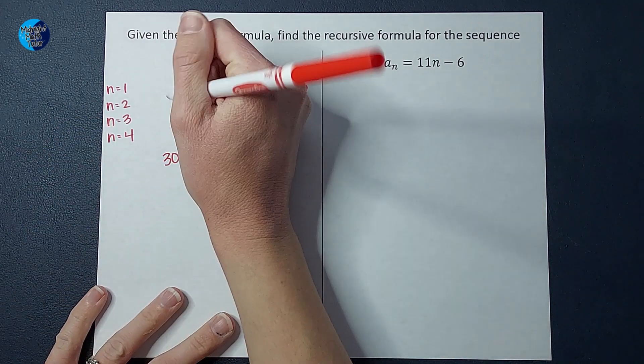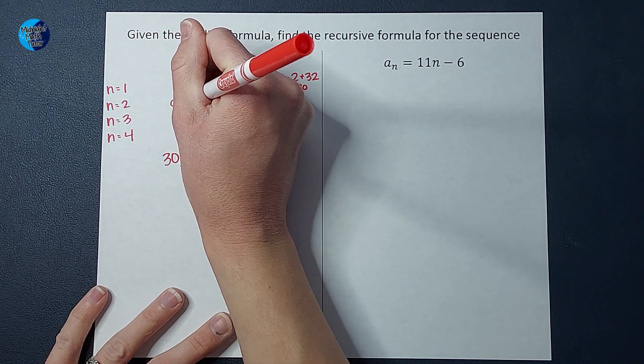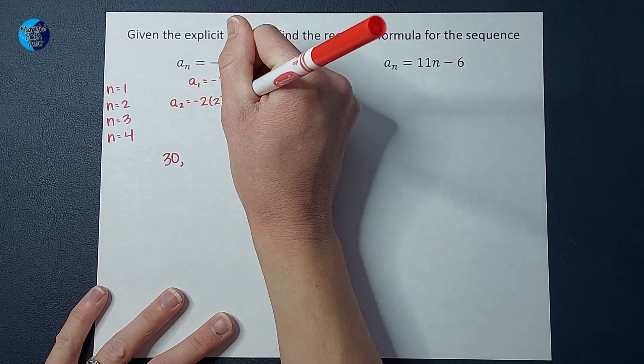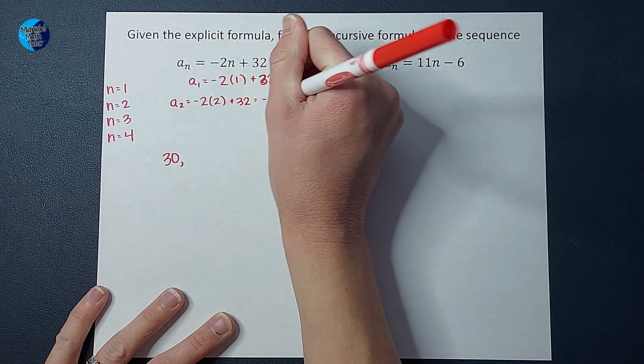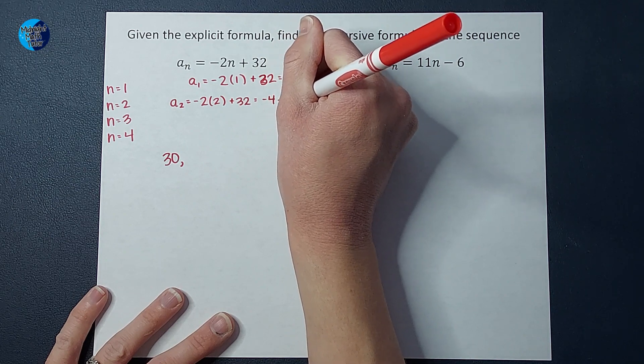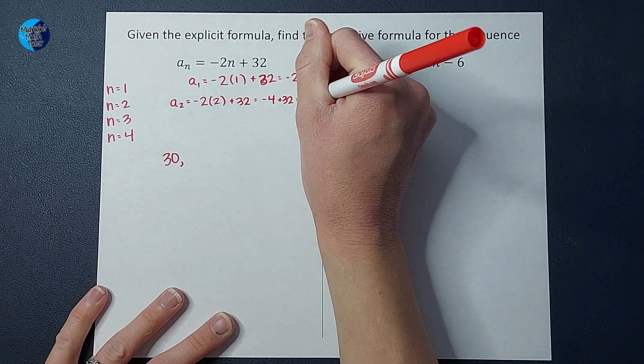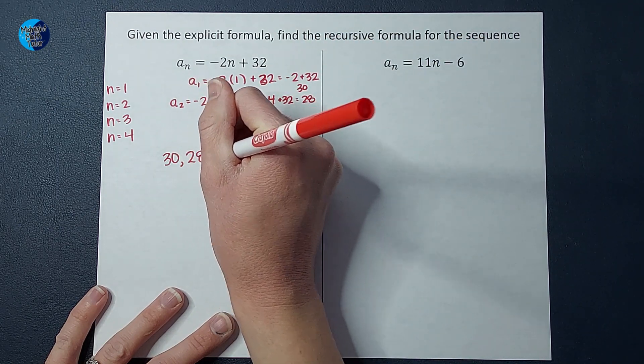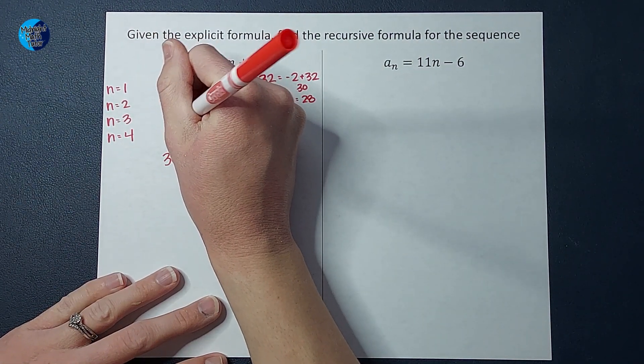Let's go ahead and plug in two. I'm going to scoot over a little, give myself a little more room. So if I'm looking for a sub two, I take negative two times it by two plus 32, which gives me negative four plus 32, right? Which will end up giving me 28. So the next term in my sequence is 28. Let's figure out the third term. You might be noticing a pattern.